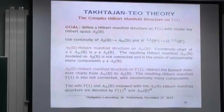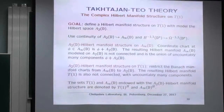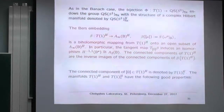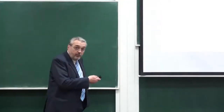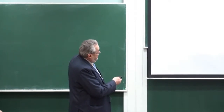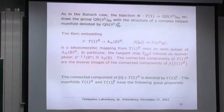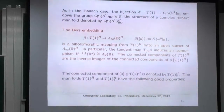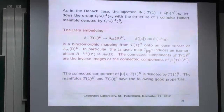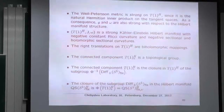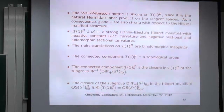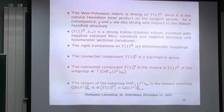On this Hilbert manifold structure things go well. There is a Bers embedding, proved by Takhtajan and Teo: a biholomorphic Bers embedding from T₁ with the Hilbert manifold structure into A∞(D) as a Hilbert manifold, given by the same formula with the same properties. The Weil-Petersson metric is strong on T₁_H, since it is the natural Hermitian inner product on tangent spaces. As a consequence, the metric and the symplectic form are also strong. With J given by the Hilbert transform, this is a strong Kähler-Einstein Hilbert manifold.